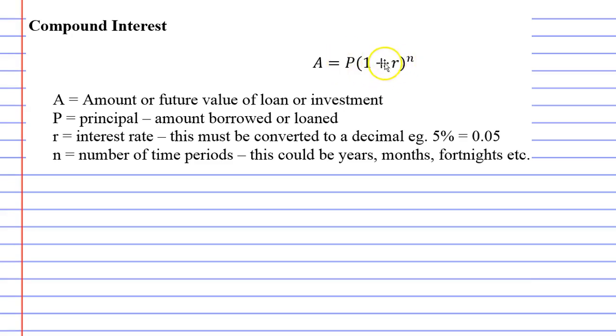It's got P for principal, R for interest rate, N for number of time periods. The only thing that's different is instead of finding interest, it finds A, which is the amount or future value of the loan.